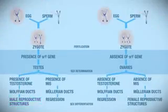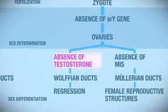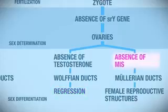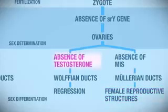Now let's look at this from a different angle. If testosterone is absent, this will prevent the Wolfian ducts from developing into male reproductive structures. Furthermore, if MIS is absent, this will stimulate the Mullerian ducts to promote female reproductive structures. Thus, the absence of either testosterone or MIS will cause the fetus to develop into a female.